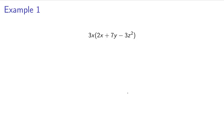Now let's go ahead and go straight into an example: 3x times 2x plus 7y minus 3z squared. I'm going to do 3x times 2x. Well, 3 times 2 is 6, and x times x is x squared.